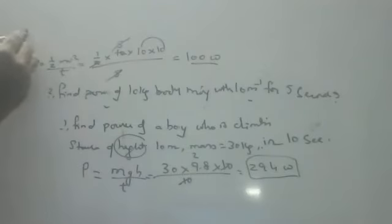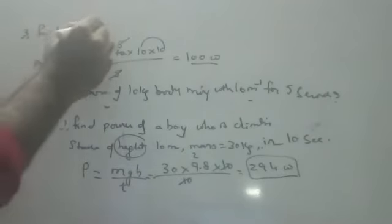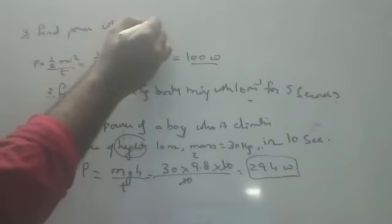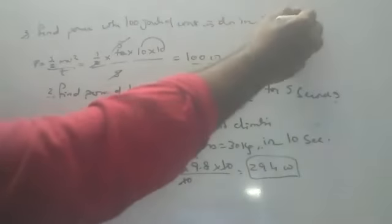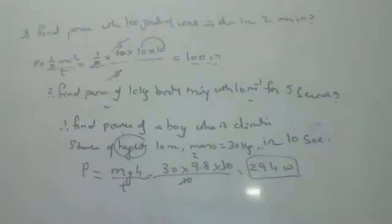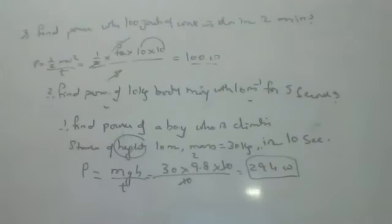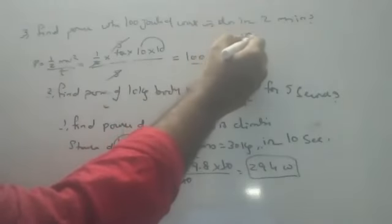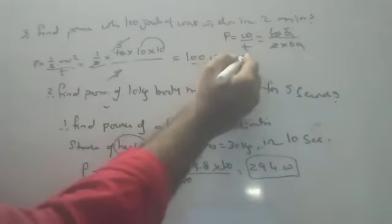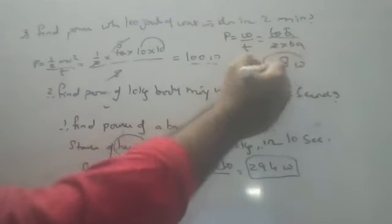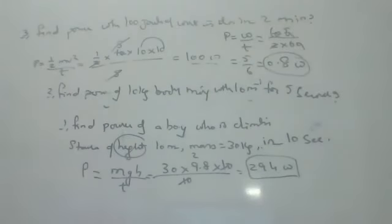Third sum: Find power when 100 joules of work is done in 2 minutes. Important: time must always be in seconds. Convert 2 minutes to seconds by multiplying by 60, giving 120 seconds. Power equals 100 divided by 120, which simplifies to 5/6, approximately 0.83 watts.